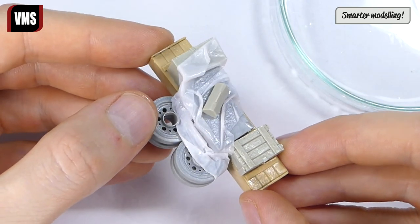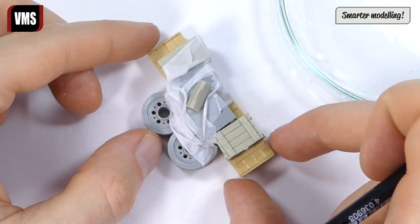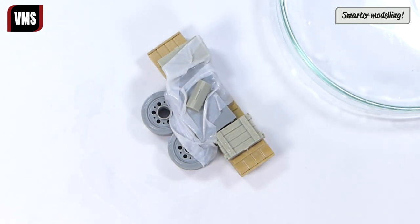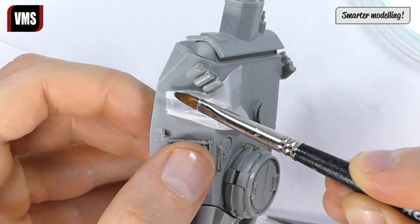You can leave the paper as is and paint the entire model with the canvas on it, or let it dry and then detach it. Let's create more rags for our model to make things interesting.